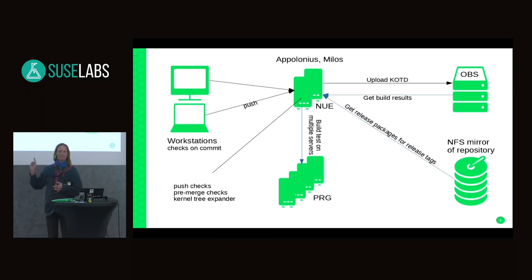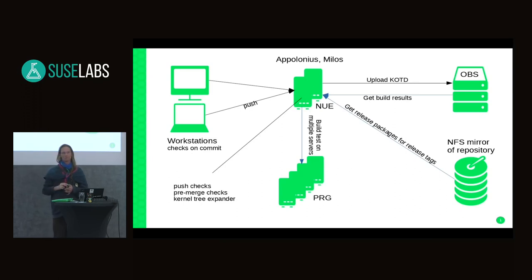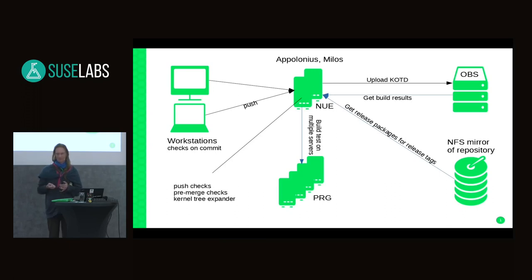Currently, the central servers that do most checks are overloaded — they do the checks and the expansion. There are times when you can't connect to the Git service on the server because it just doesn't respond. It usually happens when nobody is around to check it, and it's only temporary, so we don't really know the cause.